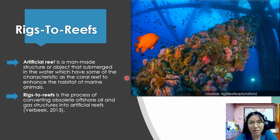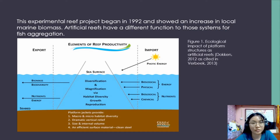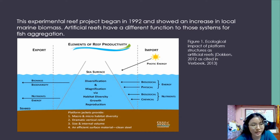So basically this is how rigs-to-reef looks like. Experimental reef projects began in 1992 and have shown increases in local marine biomass. Artificial reefs have different functions compared with fish aggregation — they can attract and aggregate fish by creating an ecosystem with input of energy and nutrients for magnification by habitat diversity, growth and reproduction, and export of biomass, nutrients and energy.